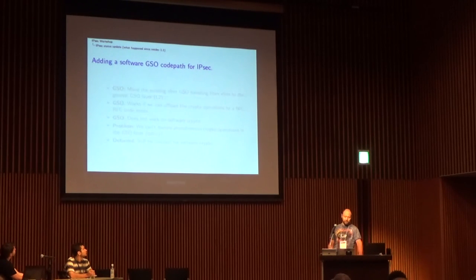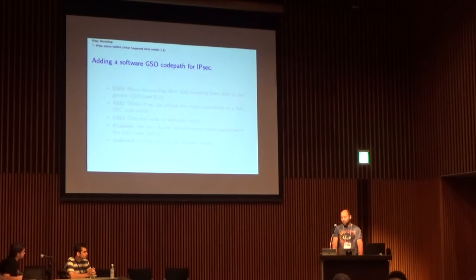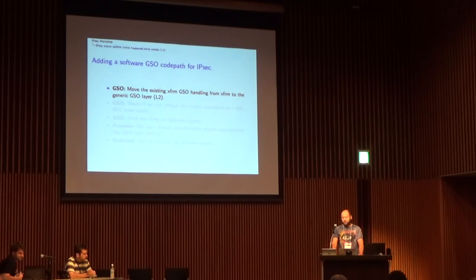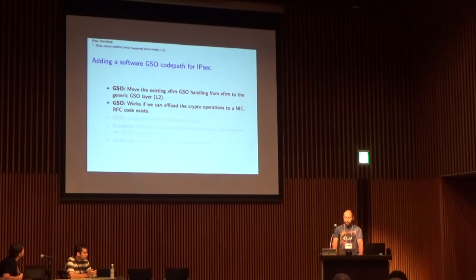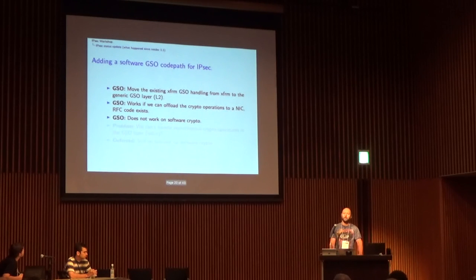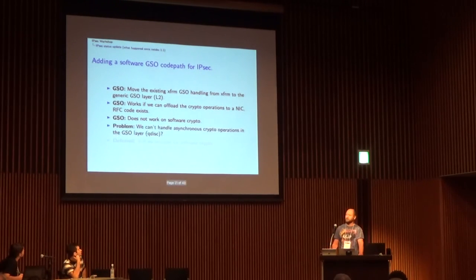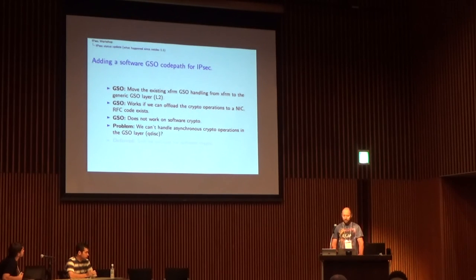On the TX path, we wanted to do something for GSO — specifically move the GSO handling from the transforms layer more toward the network card at the generic GSO layer at layer 2. Unfortunately, we faced bigger problems. It works well if we can offload crypto operations to a network card, but not well for software crypto, because software crypto operations can return asynchronously and we have real problems handling this in the GSO layer. This is deferred until we have a solution.